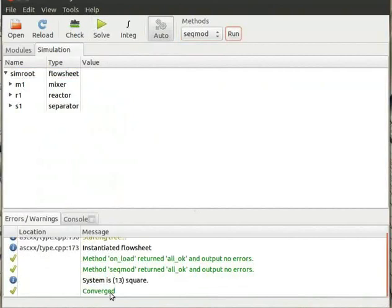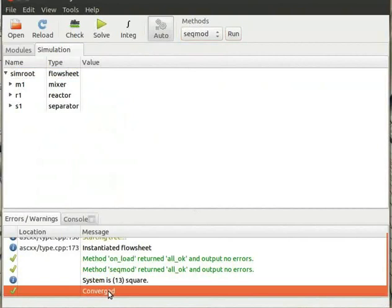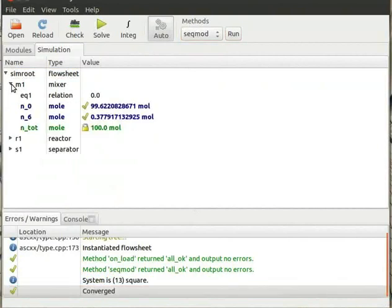You will see the message converged in the panel below. Now click on M1 mixer. You will see Ascend has calculated the values for the streams n0 and n6. It is also satisfying the equation n0 plus n6 equals n_tot. We encourage the learner to observe the values of remaining two components before and after solving the flowsheet for better understanding.